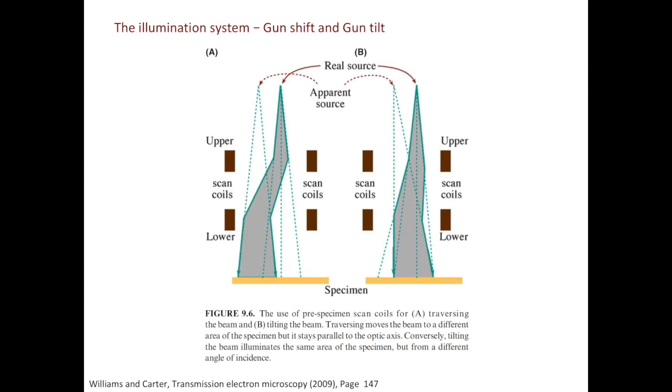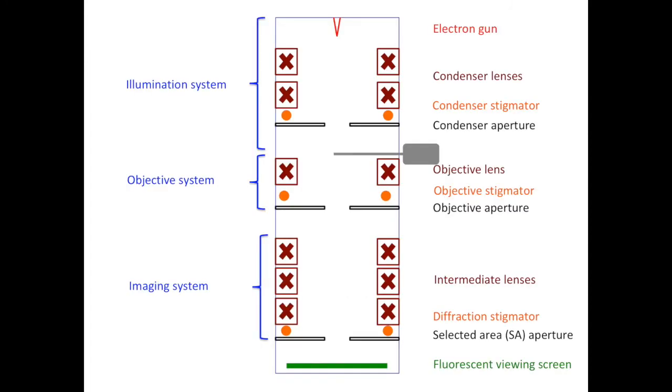In order to correct them, we need to do Gun Shift and Gun Tilt. The fundamental idea of the Gun Shift and Gun Tilt alignment is to make sure the electron beam travels along the optical axis of the lenses. How do we do Gun Tilt and Gun Shift? Let's come back to the TEM sketch. So we have the Gun Deflectors to do that. Similarly, in the objective system, we have the Beam Deflectors to do Beam Shift and Beam Tilt.